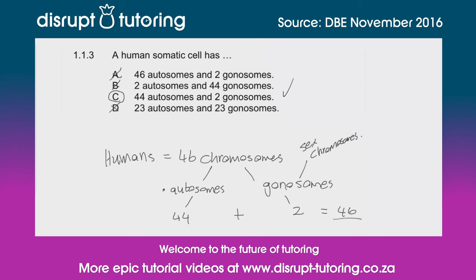44 autosomes and 2 gonosomes, giving us our 46 chromosomes. And that's it guys, that's it for me.